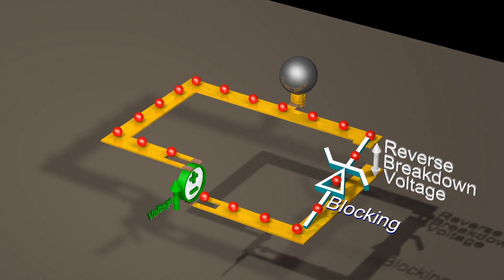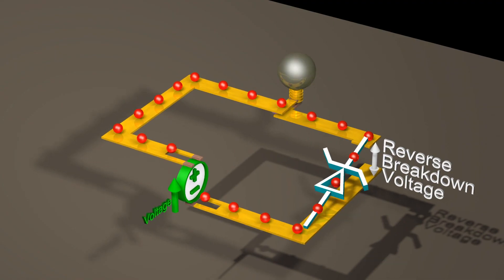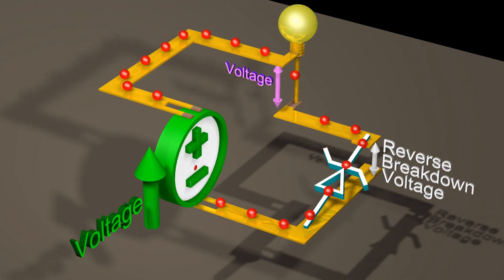But when a reverse voltage larger than the breakdown voltage is present, the Zener diode will start to conduct in the reverse direction.